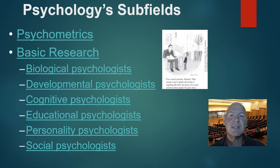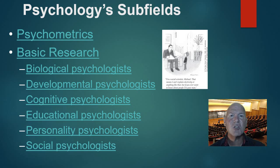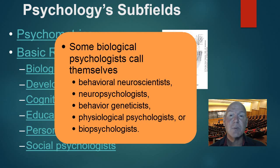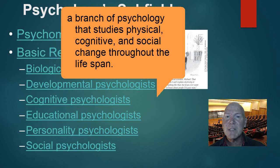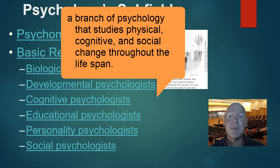We have things like psychometrics — how do we measure psychological aspects? If you do a depression inventory, for example, a psychometric psychologist would have developed that. Biological psychologists research how your brain works, the actual biology of things that happen in your genetics. Developmental psychologists look at what common things people experience from conception to death — common development we can expect socially, emotionally, and physically.